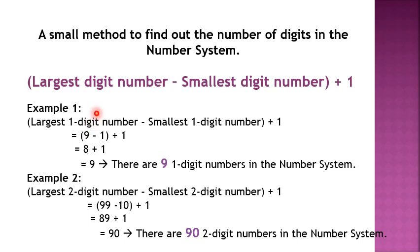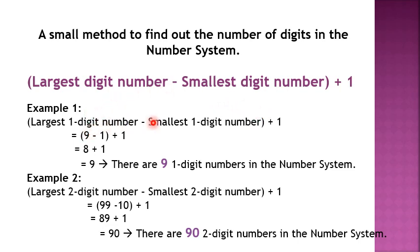We have to subtract the smallest digit number from the largest digit number and to the difference, we add 1. Let us see some examples. Example 1: largest one-digit number minus smallest one-digit number plus 1. The brackets indicate that we first do the subtraction, then add 1 to the difference. The largest one-digit number is 9 and the smallest is 1. Nine minus one gives us 8, and 8 plus 1 gives us 9. So there are nine one-digit numbers.